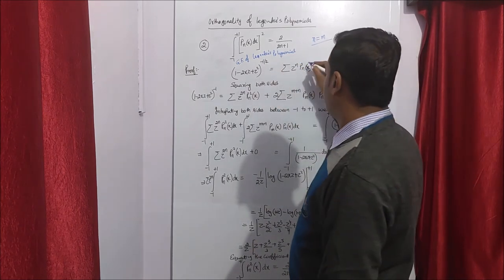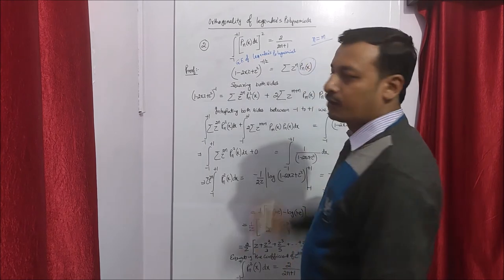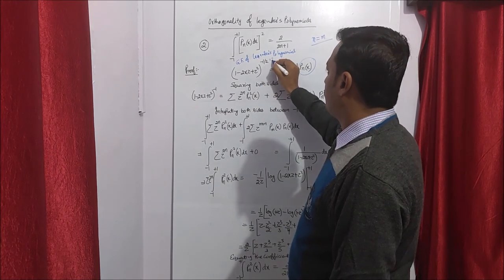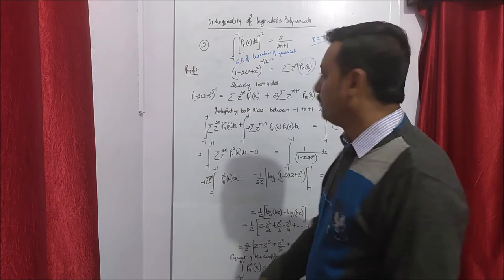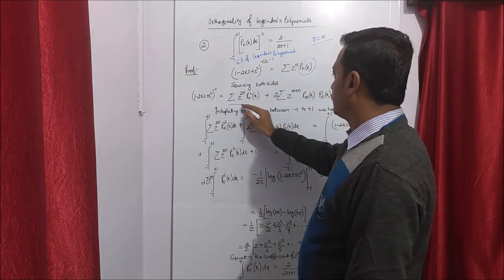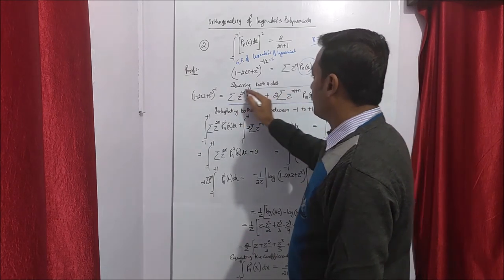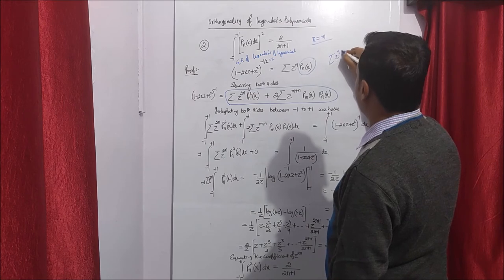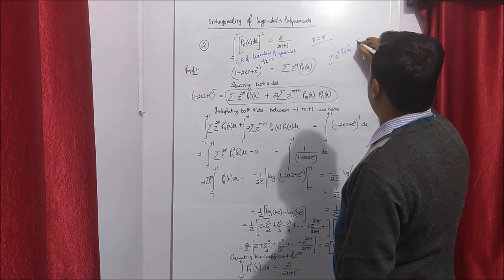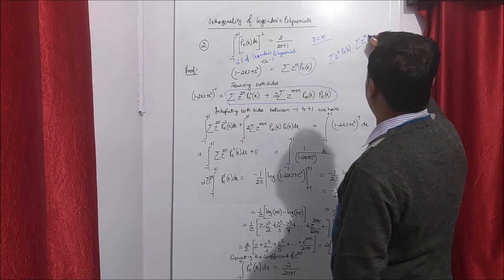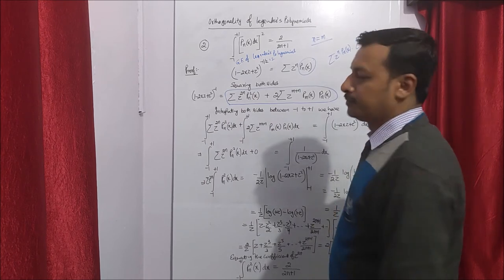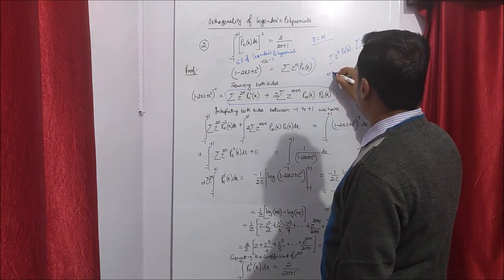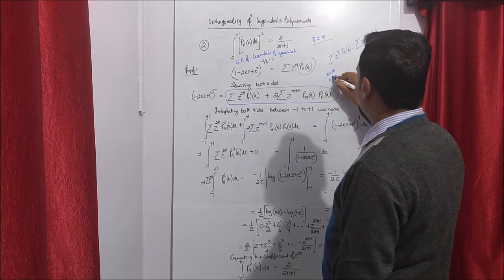Since we need the square value of Pn(x), we square both sides. Squaring the RHS summation: we write summation z to the power n Pn(x) times summation z to the power n Pm(x). When we multiply both sides, two cases arise: when n equals m, and when n is not equal to m. When n equals m, combining z to the power n and z to the power n gives z to the power 2n, with Pn(x) squared.